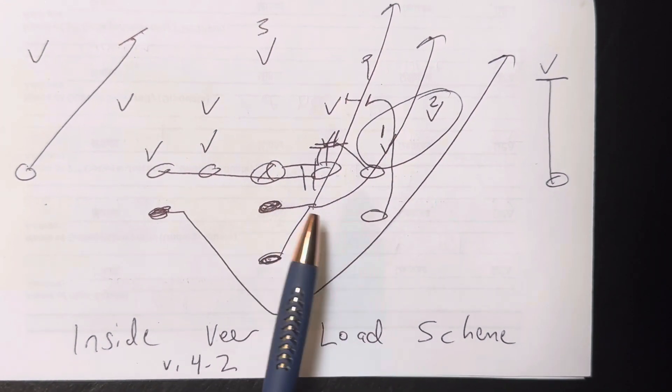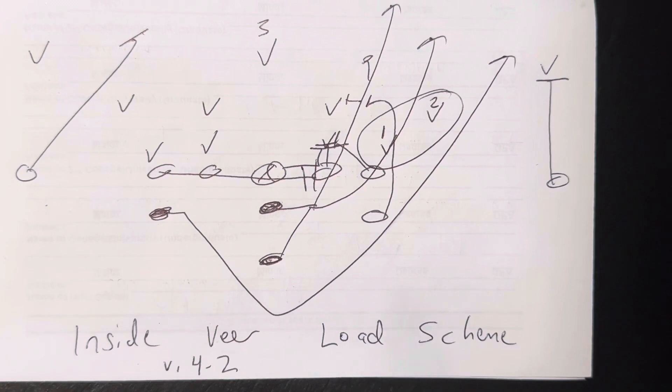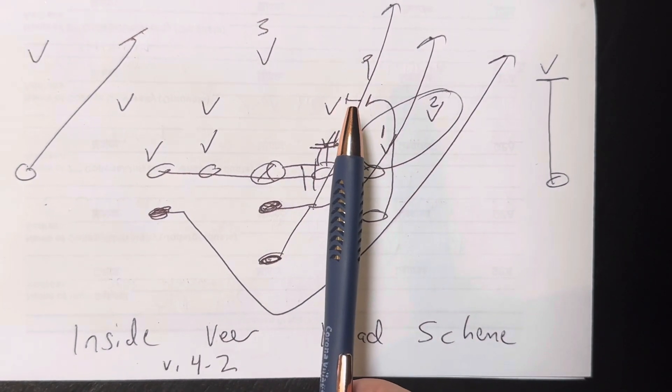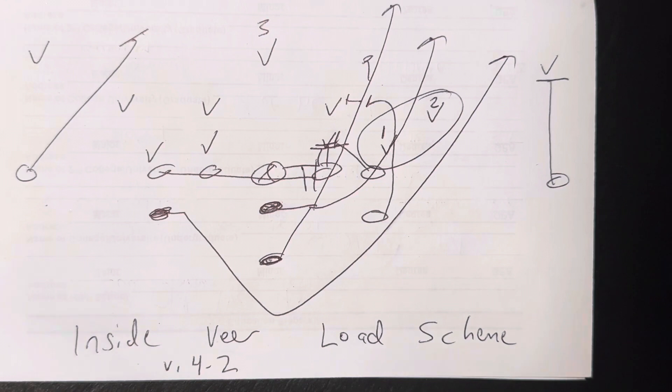Quarterback takes the snap, jumps playside, points the ball, the B sprints through the ball, sprints through the playside hit with the tackle, sprints through the end zone.